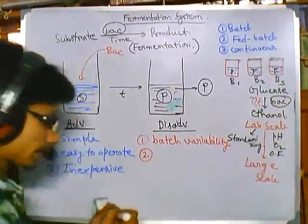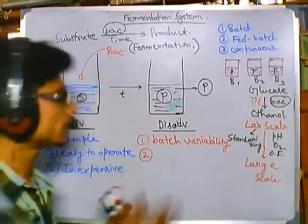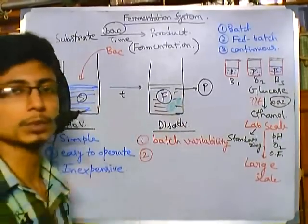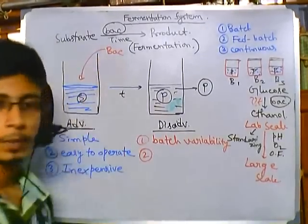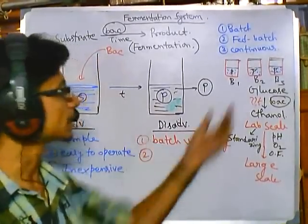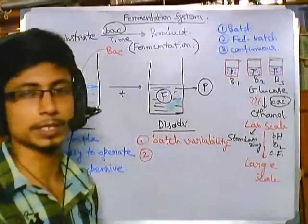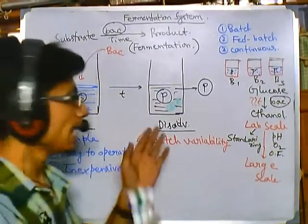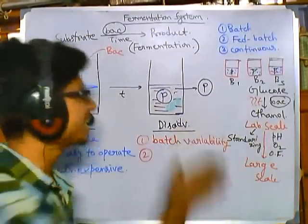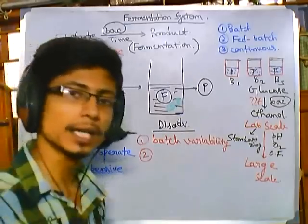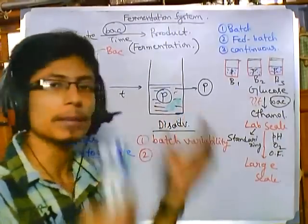A second disadvantage is that batch fermentation requires several important upstream events before each run: choosing and sterilizing the container, preparing a sterile substrate solution, adding the inoculum, running fermentation, then taking out the product, cleaning the container, and sterilizing it again. This chain of events must be repeated each time a batch fermentation is started.